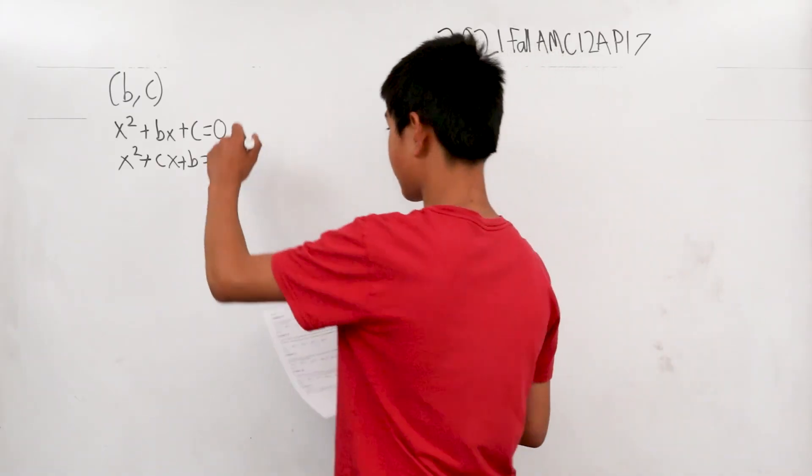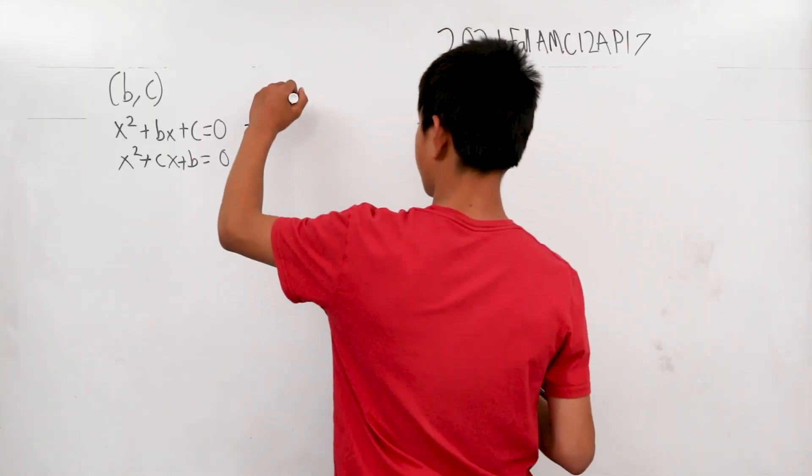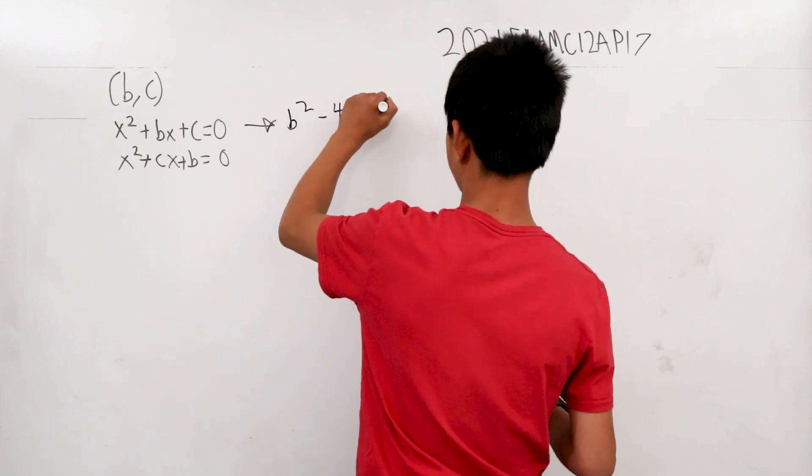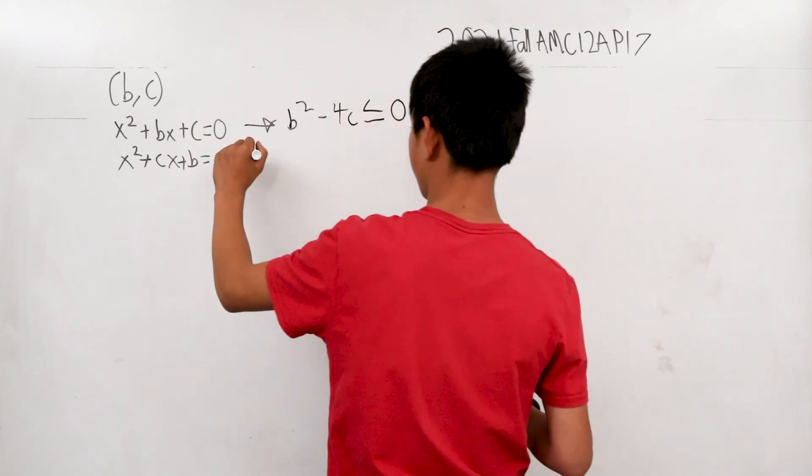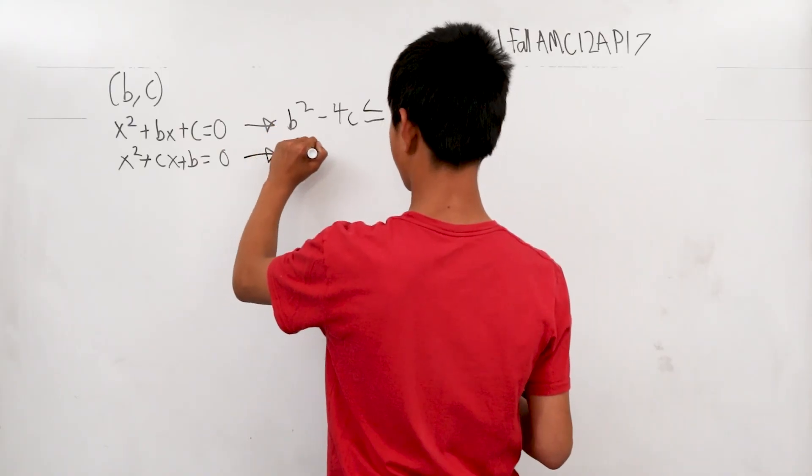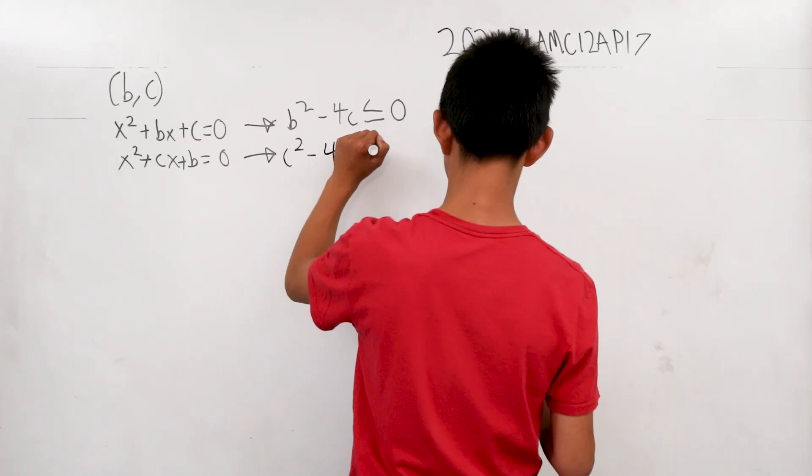Let's derive this first case. The discriminant is b² - 4c, which has to be less than or equal to zero. And you can derive that c² - 4b is also less than or equal to zero.